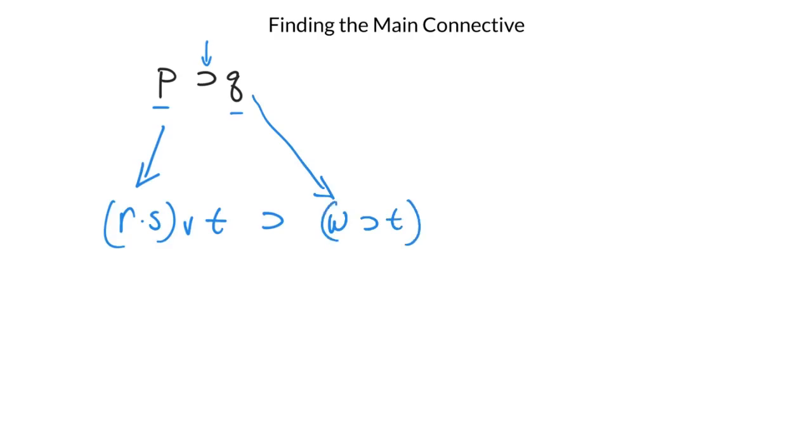Well now the question would be what's the main connective? Well normally there's going to be some set of parentheses or some natural break that will tell you. So in this instance, when I look at the expression, I can still see that this whole thing is bound by those two parentheses on the outside and this is bound by the parentheses on the outside. So therefore, that remains the main connective.